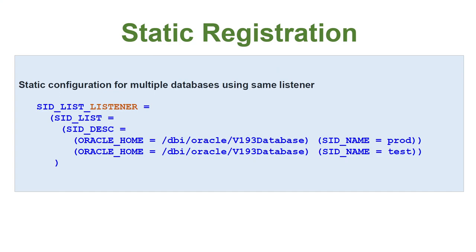What I wanted to explain is: you can have static registration in such a way that the same listener can listen to multiple databases. It is not required to have multiple listeners for multiple databases — you can have one listener serving multiple databases. To do that, in the SID list description you can specify multiple Oracle homes along with the database names, and register those instances with one listener.